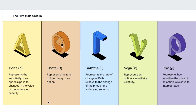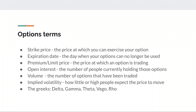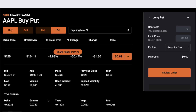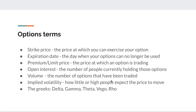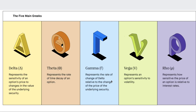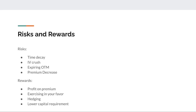Vega represents the option's sensitivity to volatility — that implied volatility we discussed. Rho represents how sensitive the option's price is relative to interest rates. I never really use rho personally, but for longer-term investors on large-cap names it's probably important. Check the links in the description if you want to get more in-depth on those.